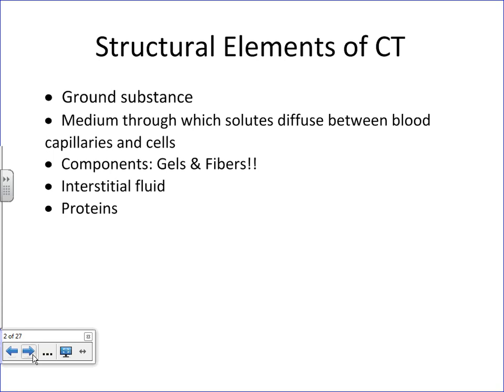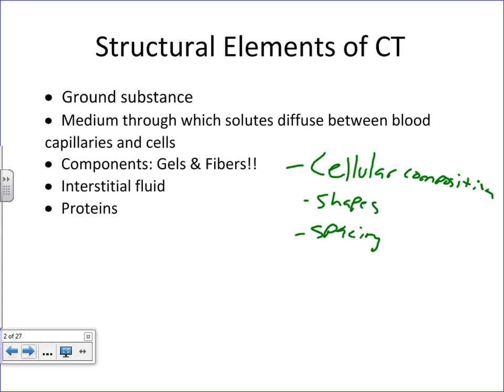Before getting into the various connective tissues, remember that histology is the study of tissues underneath the microscope. In order to differentiate between tissues, you have to pay attention to a couple of things: cellular composition — the shapes of the cells, the spacing in between cells, the amount of cells. Look at all aspects of the cells you can, in order to understand what a tissue is composed of, because life is all about the sum of all activity at the cellular level.